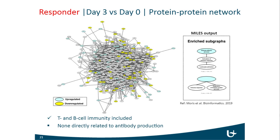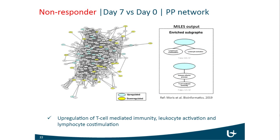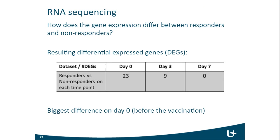For our day seven measurements in non-responders, we again find upregulation of T cell-mediated immunity, leukocyte activation, and lymphocyte co-stimulation genes. This tells us what gene expression does in response to the vaccine, but it doesn't really answer why we see a difference between responders and non-responders, given that these individuals are all about the same age with no big differences between males and females.